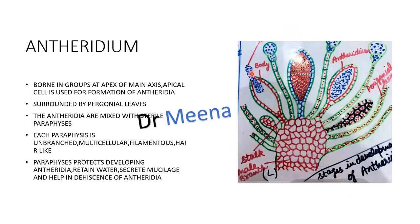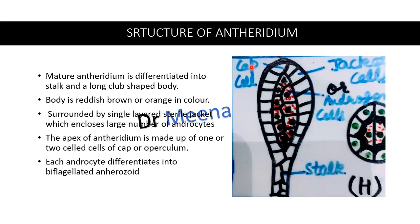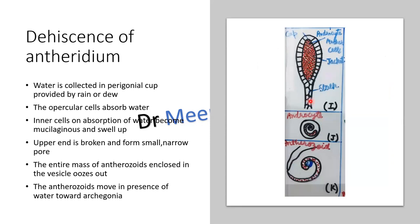This is the dehiscence of the antheridium. From the tip part, when it ruptures, this mass of antherozoids will come out. In this cup, water will fill up, and antherozoids will swell up and exert pressure on the upper side, and these antherozoids will come out of the antheridium and ultimately be liberated. With the help of their flagella, they can move toward the archegonia, because where they are growing there is water, and with the help of water they will move toward the archegonia or the female structure.